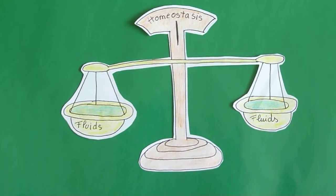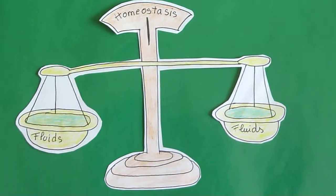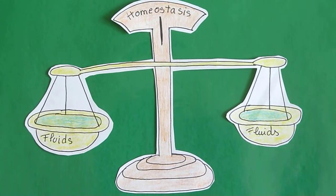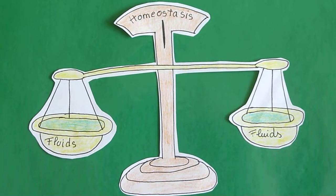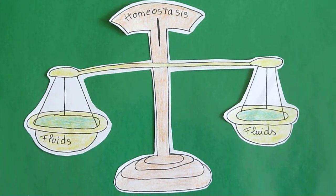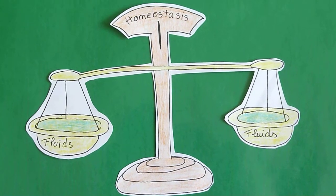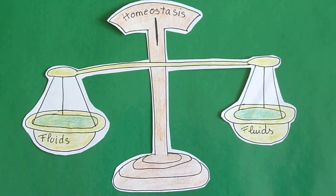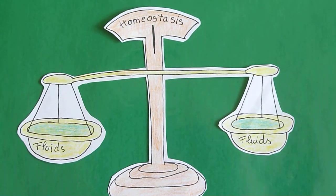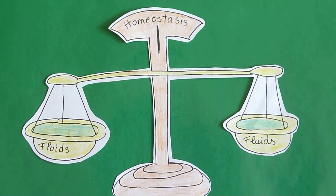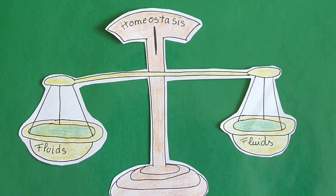So first off, what is osmoregulation? It's the body's response mechanisms and their attempt to maintain homeostatic levels of water. Particularly, we're going to be looking at that in humans. But in general, it's the process of regulating water potential in order to keep fluid and electrolyte balance within a cell or organism in relation to their surroundings.